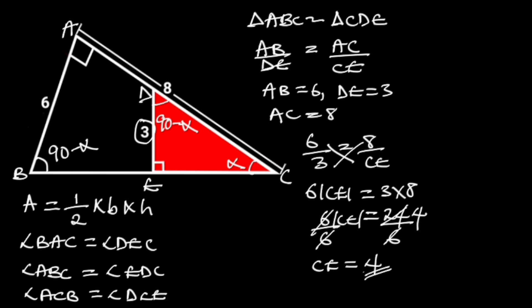And this is the base of triangle CDE. Now we know the base, let's go ahead and find the area of triangle CDE. The area of triangle CDE is equal to 1 over 2 times 4 times 3. 4 divided by 2 is equal to 2. So we are left with 1 times 2 times 3 which is equal to 6.